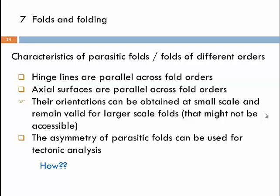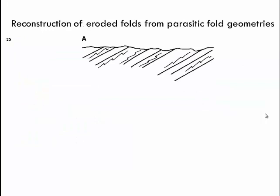The asymmetry of parasitic folds can be used for tectonic analysis. For instance, in an area where a geologist has mapped a uniformly dipping sequence of layers, and smaller parasitic folds are visible within them, we can identify Z-shaped folds in some layers and S-shaped folds in others. From these geometric relationships we can reconstruct the overall fold structure.